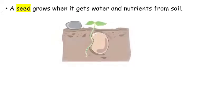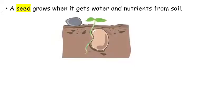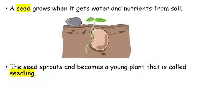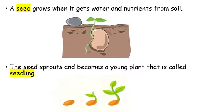A seed grows when it gets water and nutrients from the soil. The seed sprouts and becomes a young plant that is called a seedling, as you can see in the picture.